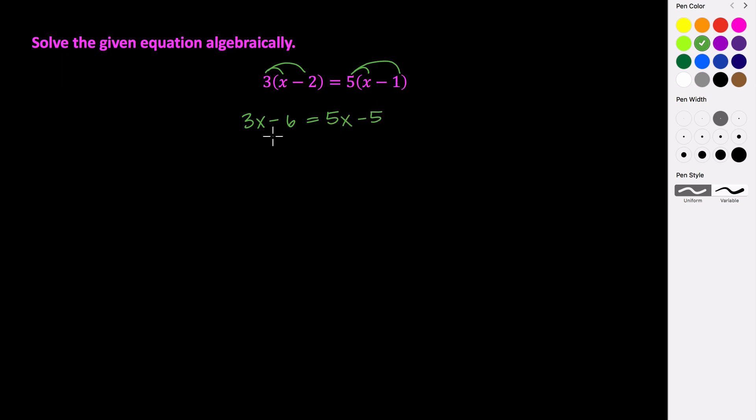Then I'm going to get the x's on the left and my constants on the right. So I'm going to subtract 5x from both sides and I'm going to add 6 to both sides. So this is going to cause the 5x's to cancel and the 6's to cancel and will leave us with negative 2x equals 1.